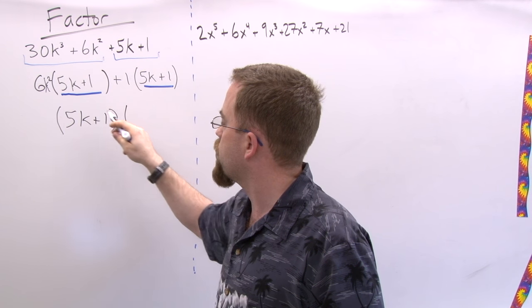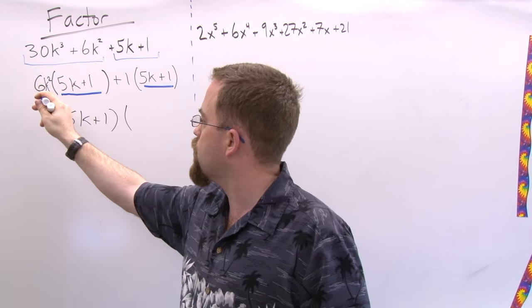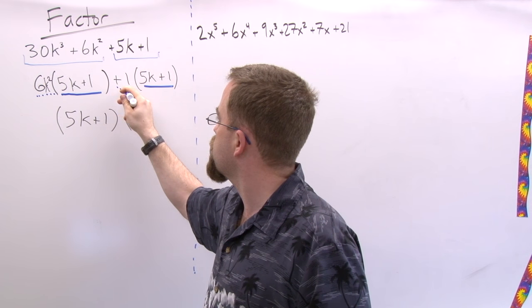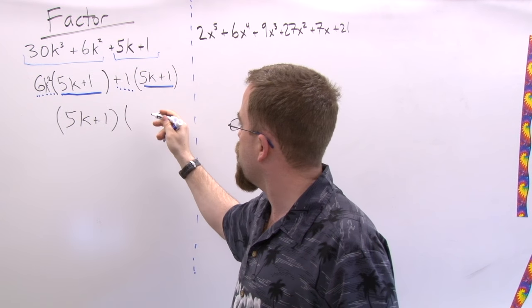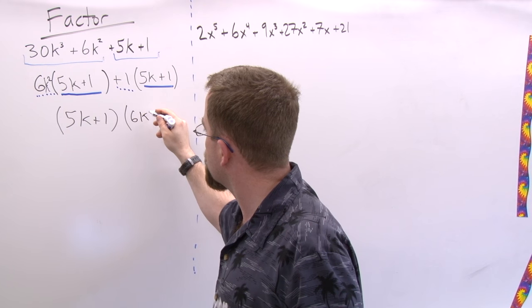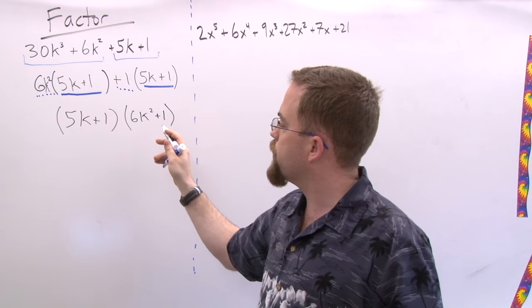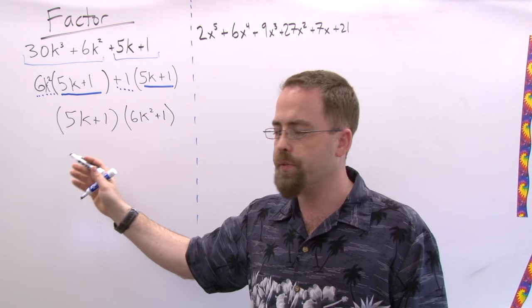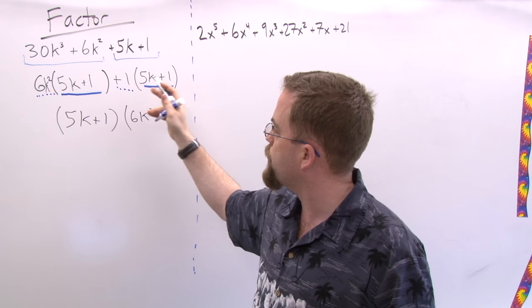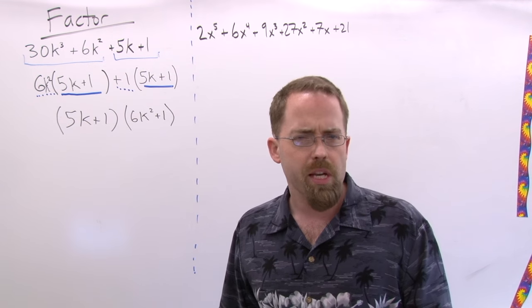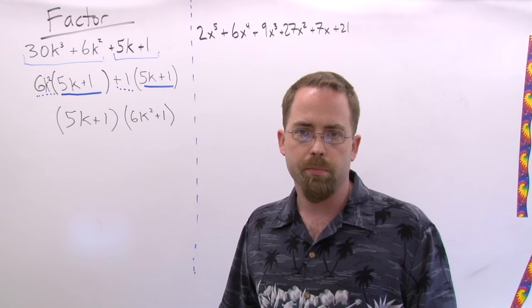And then the two pieces over here, this piece and this piece, each happen once. So 6K squared plus 1. But the temptation to write the 5K plus 1 twice because it happened there and happened there, you should be able to think why that couldn't possibly be the case.